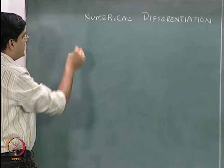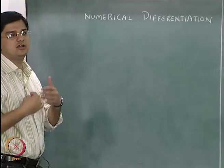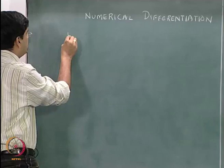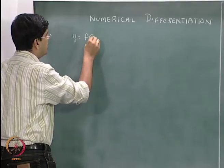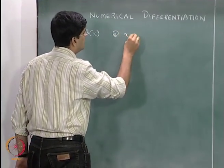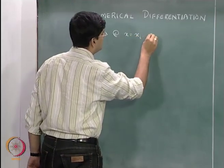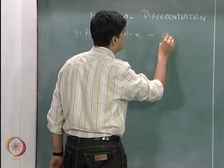At any point x_i, we want to find dy by dx — that is, given y equal to some function f of x at x equal to some x_i, we want to compute dy by dx.